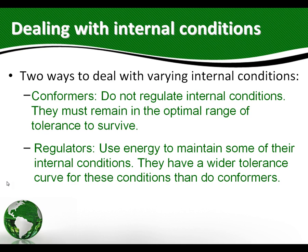Those that do regulate their internal conditions are called regulators. Regulators will use energy. Since we're warm-blooded animals, our body temperature remains pretty constant, and in order to do that we have to use energy — it doesn't just magically happen. Because we can use energy to regulate our internal conditions, we have a wider tolerance range or a wider tolerance curve than conformers do.